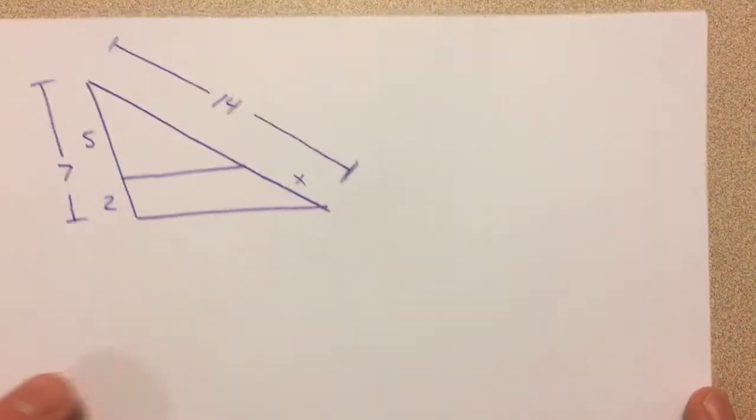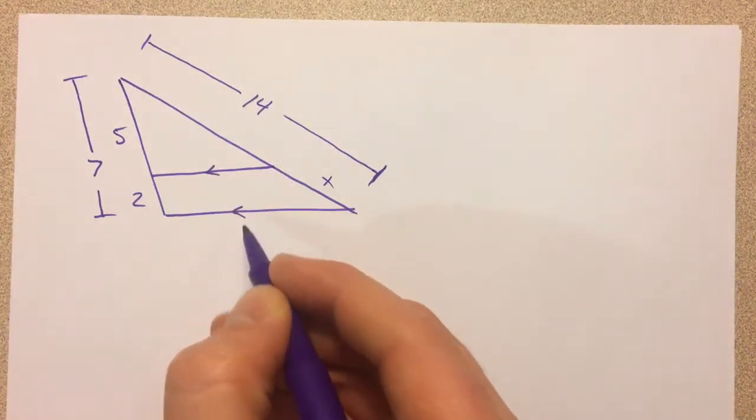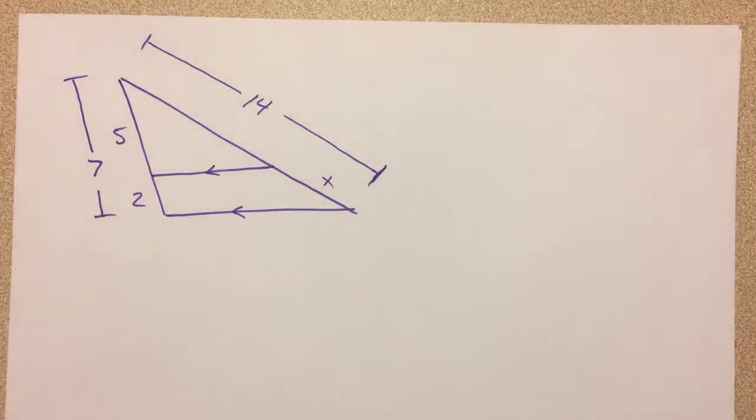And so we're looking in here, and we want to solve this for x. Triangle proportionality theorem is all based on having parallel lines. And so I want to notice which pieces are related.